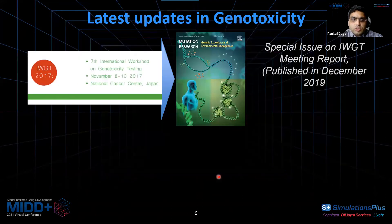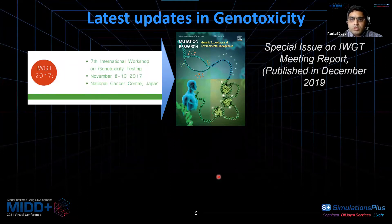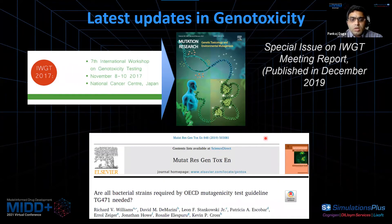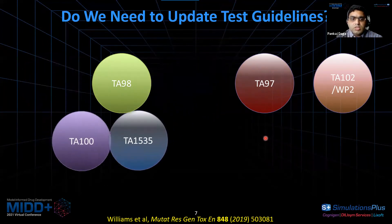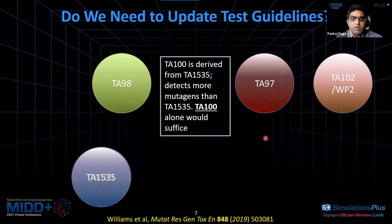These models are very important. The International Workshop on Genotoxicity Testing holds workshops every four years, and the latest workshop was in 2017. They published their meeting reports in December 2019. One interesting paper from these proceedings addressed whether all bacterial strains mentioned in OECD test guidelines are required. The conclusion mentions that TA100 and TA1535 have overlapping results — in fact, TA100 is derived from TA1535, so testing mutagenicity in TA100 alone would suffice.